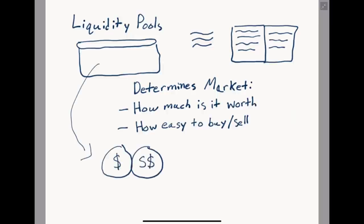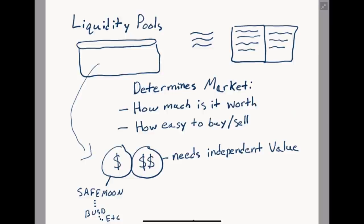A liquidity pool is like a wallet but instead holds two tokens inside of it. One of these tokens is the token we are creating a market for — in our case it's SafeMoon, but it could be a different token like BUSD. The other token needs to have a market outside of the liquidity pool, meaning the price needs to be stable enough to survive in multiple other markets. Binance token BNB is an example — it has its own centralized exchange and is listed on many others, creating a large and diverse market for it.